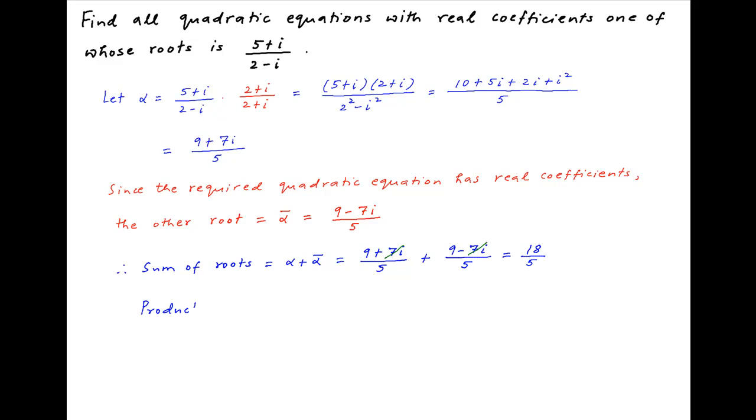And the product of the roots of the required quadratic equation is equal to 9 plus 7i upon 5 times 9 minus 7i upon 5. This is equal to 1 upon 25 times 9 square minus 7i whole square, which is equal to 81 plus 49 divided by 25. This is equal to 130 divided by 25, which simplifies to 26 upon 5.